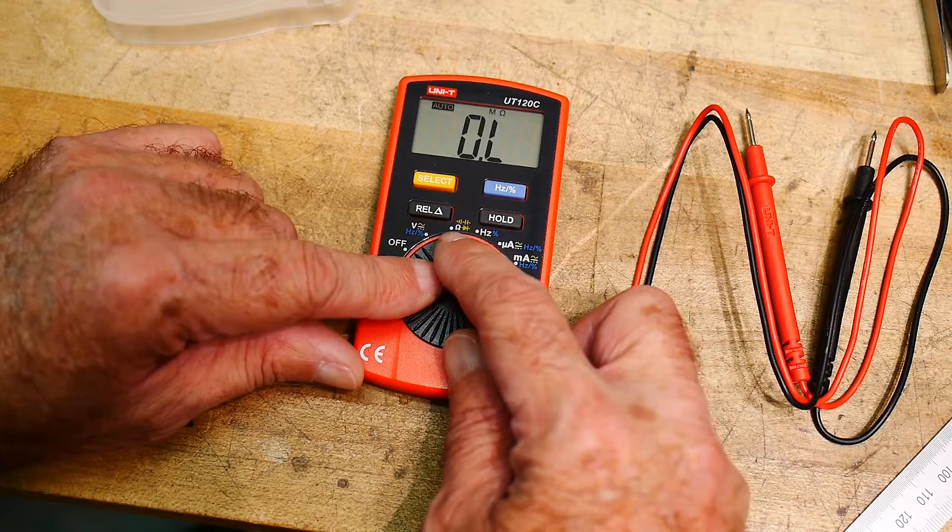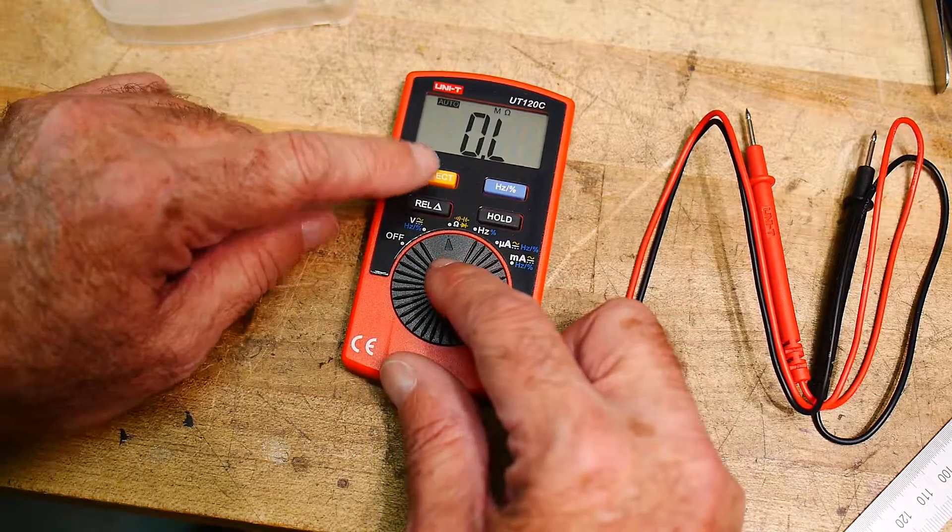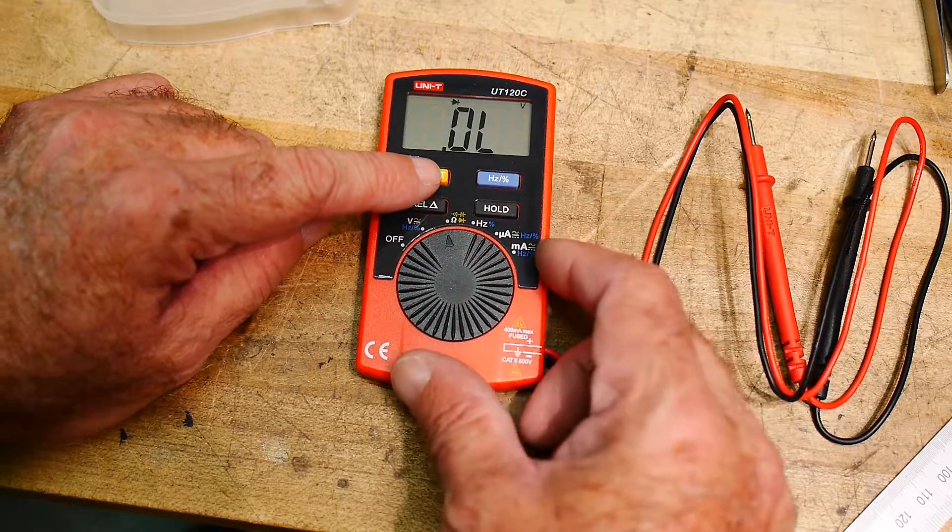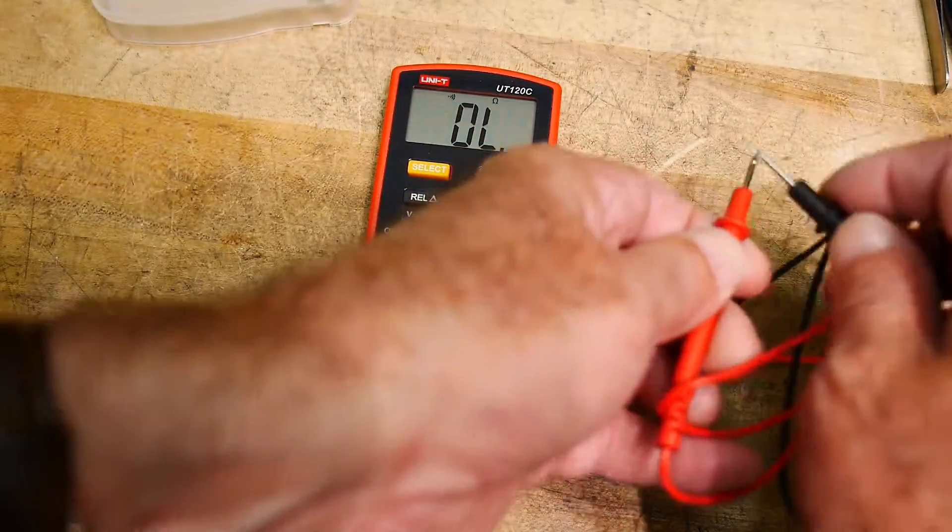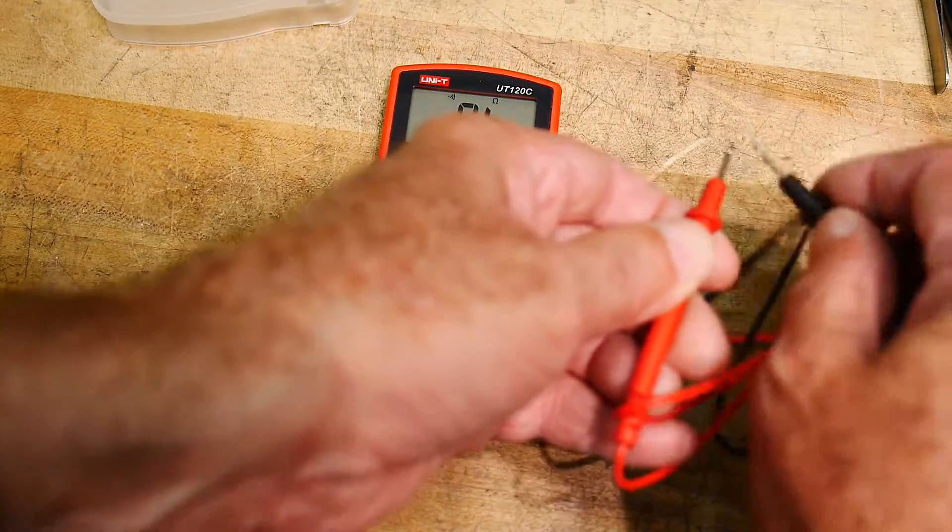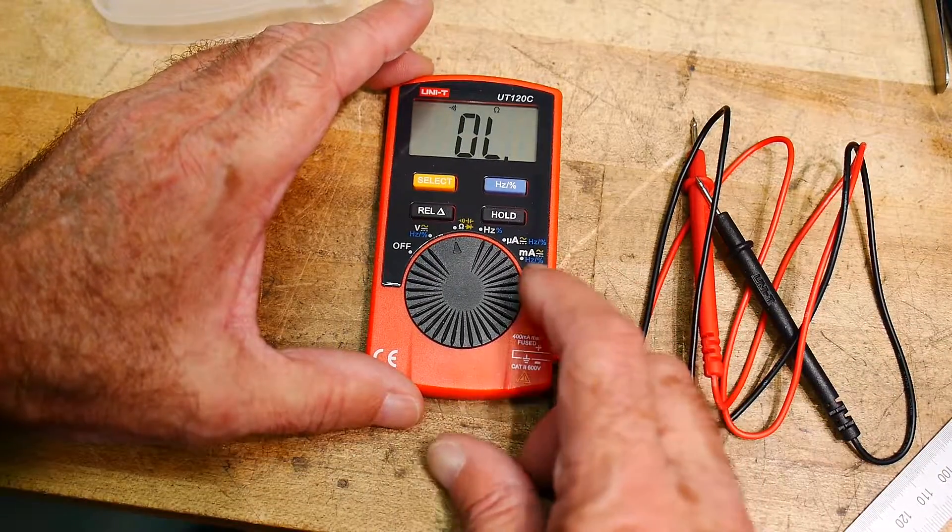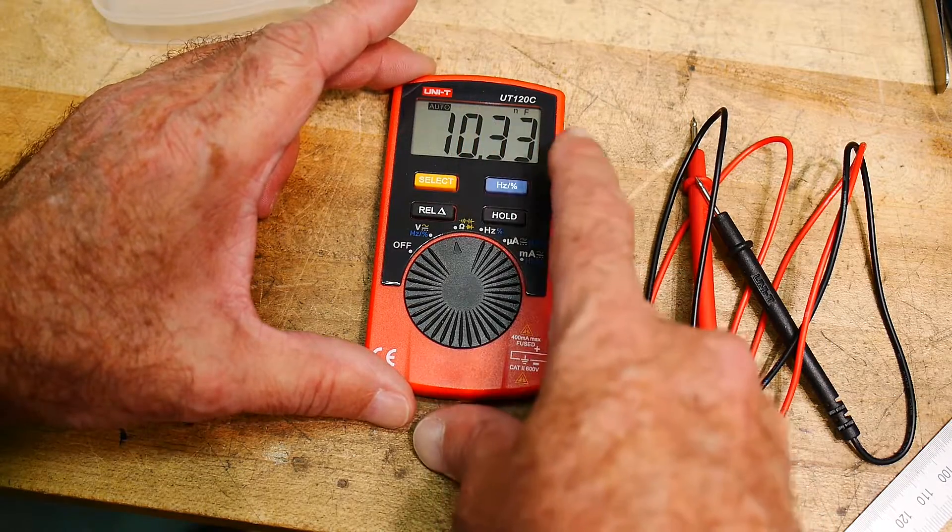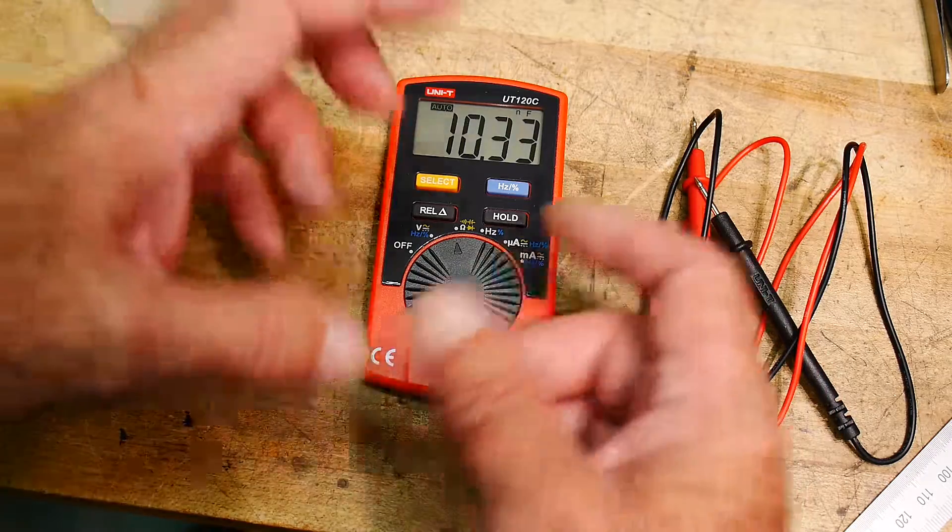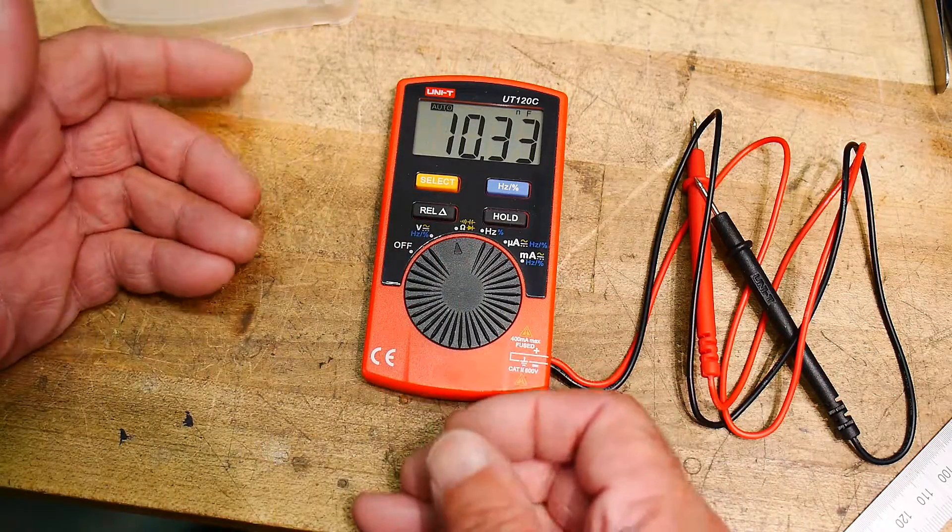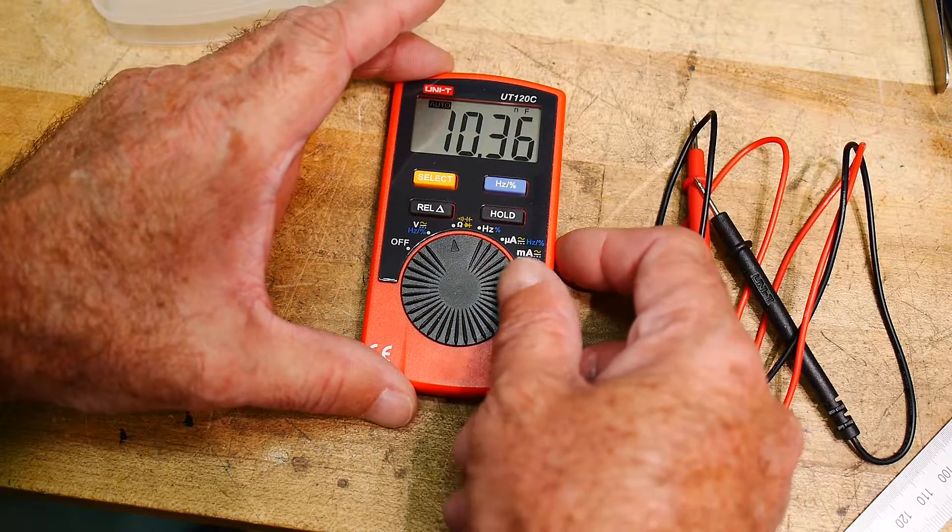It does ohms, it does diode checks, and it does beeping continuity. Not very good for scratchy, so it's not latching. And it does capacitance, which is cool. Sometimes when I go to the junk store, I want to measure if the capacitance is as marked on the box or not, so I'll measure them.